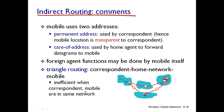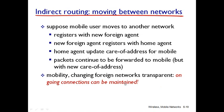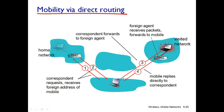Indirect routing is inefficient and takes a long time. Another problem is if the correspondent and the visited user are both in the same network sitting beside each other, the information still moves from the visited user to the foreign network and then back to the correspondent. This is a big disadvantage of indirect routing. To overcome this, we have something called direct routing.